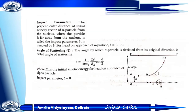Next — impact parameter. What is the impact parameter? The perpendicular distance of the initial velocity vector of an alpha particle from the nucleus, when the particle is far away from the nucleus, is called the impact parameter. It is denoted by b. For head-on approach of an alpha particle, b equals zero, and the angle of scattering is denoted by θ.